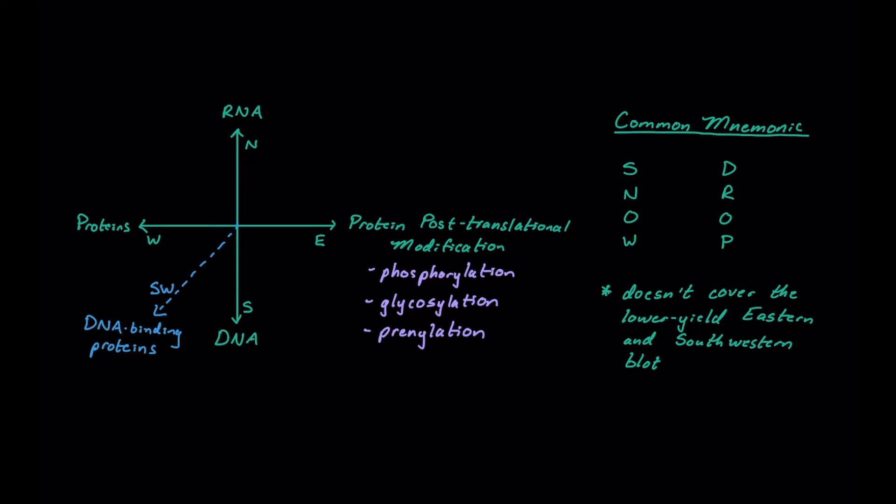The S will stand for Southern. The D will stand for DNA. So we know Southern corresponds to DNA. N will stand for Northern. R will stand for RNA. Therefore, we know Northern blot is going to look at RNA.